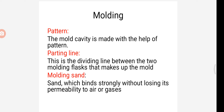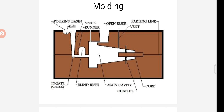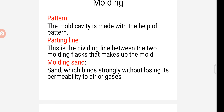Next we can go to the parting line. In this mold we can see the parting line. This is the dividing line between the two molding flasks. The flask is nothing but the boxes — cope box and drag box.